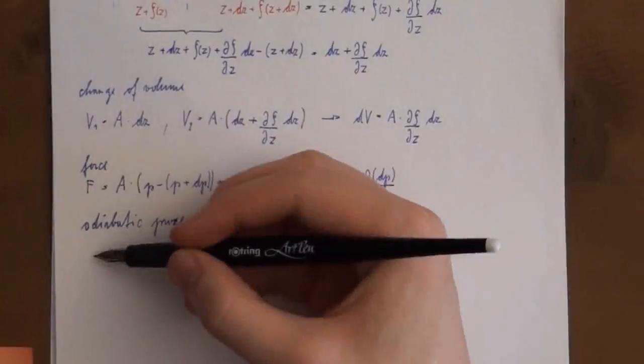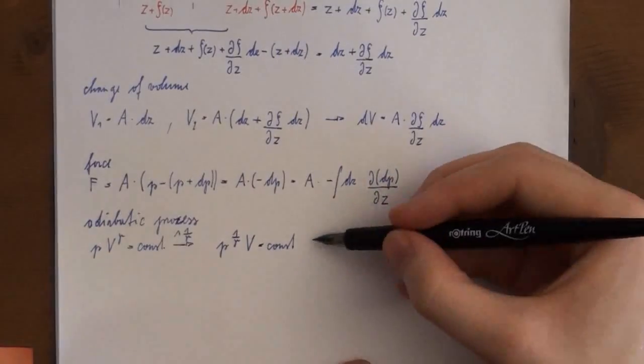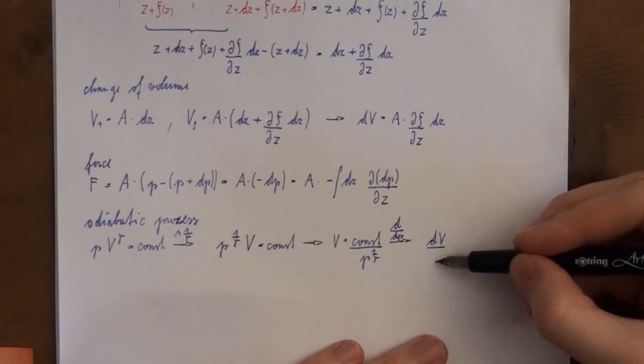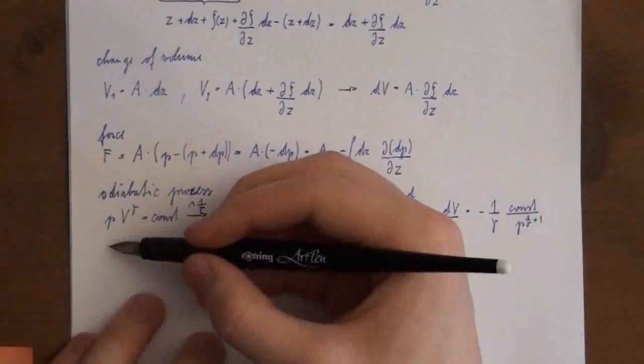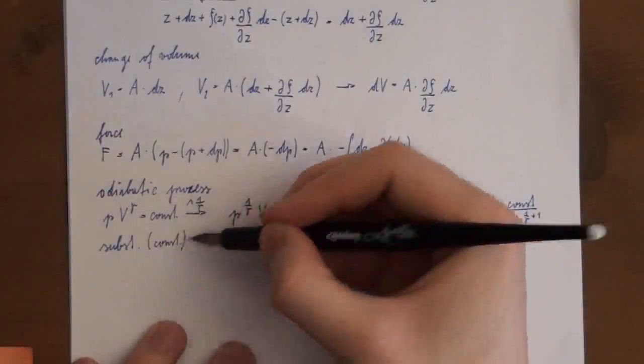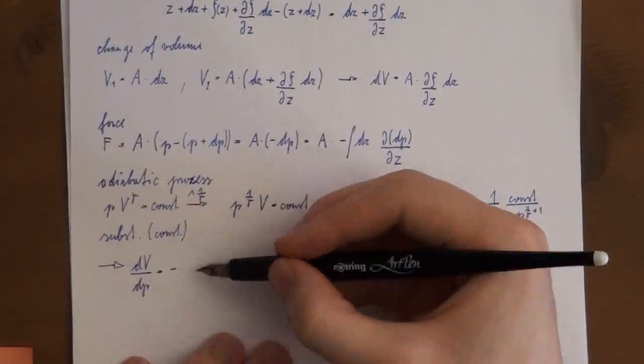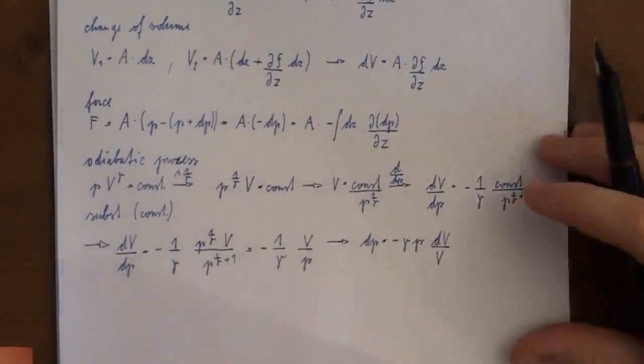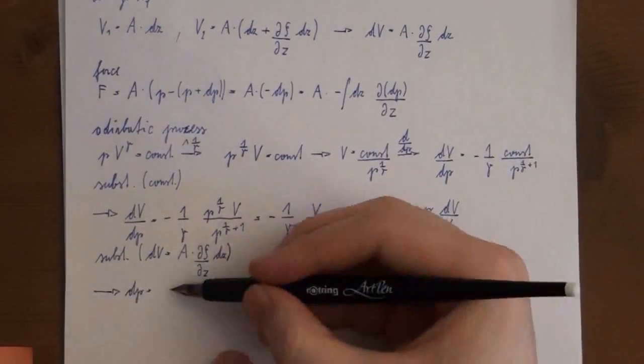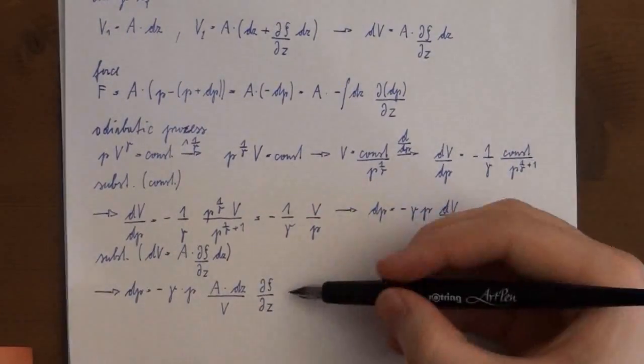For an ideal gas pressure times volume to the power of the adiabatic exponent is constant. After a bit of juggling with the terms we differentiate with respect to P. Then we substitute the constant by pressure to the power of the adiabatic exponent times volume and simplify. Finally we substitute the change of volume by its expression to get the value for DP.